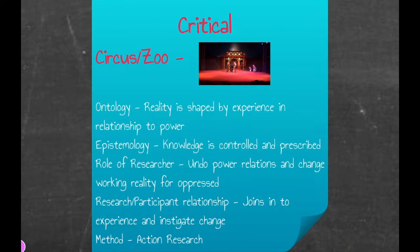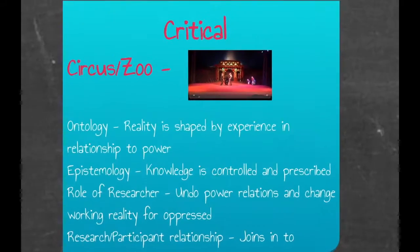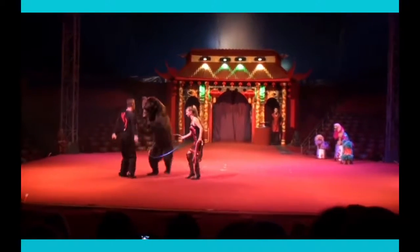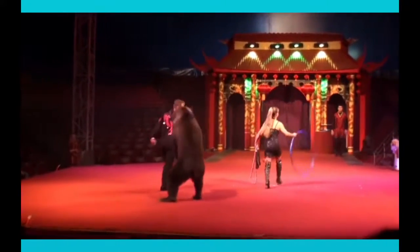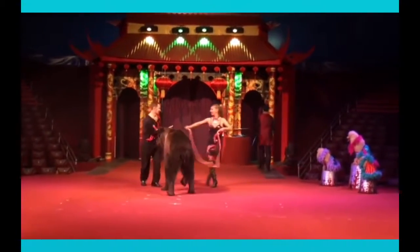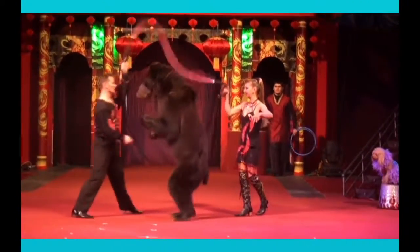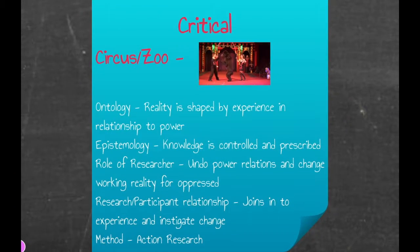Next we have the critical paradigm. I chose circus animals to reflect the critical paradigm because of the power dynamic that applies. Reality and knowledge are shaped by an oppressive force onto a group that lives multiple truths. There can be a strong desire to create change and question who holds the power, why the power exists, and what can be done in response. The critical paradigm often evokes action-oriented methodology where researchers find points of entry to disrupt power and create agency for the oppressed.